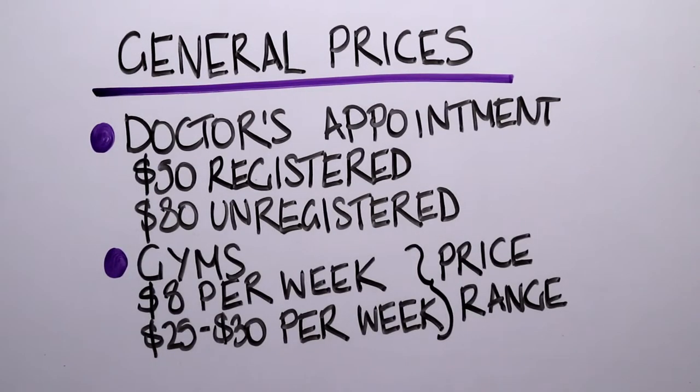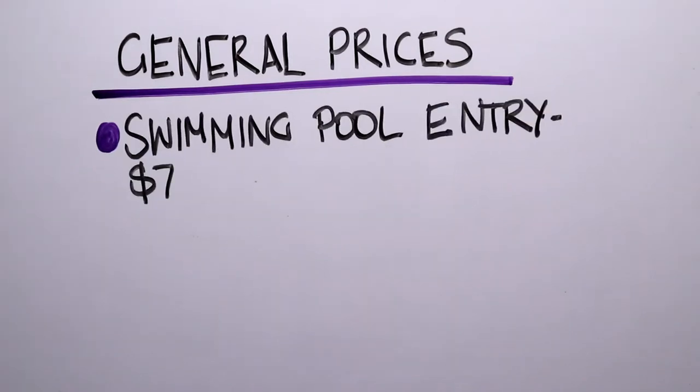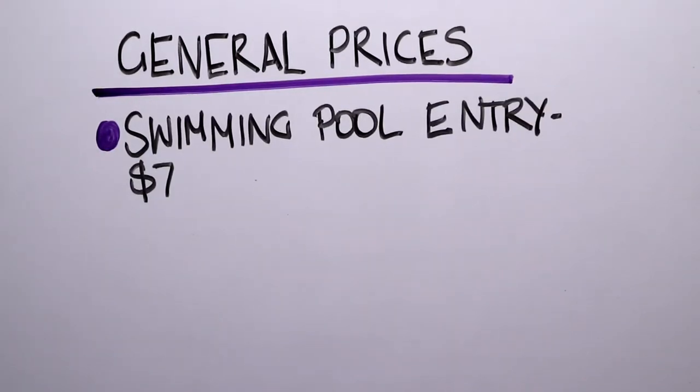Gyms are as low as around $7 to $8 per week for the 24-hour style gyms, and up to $25 to $30 a week for more fancy gyms. It's approximately $7 to use public swimming pools.